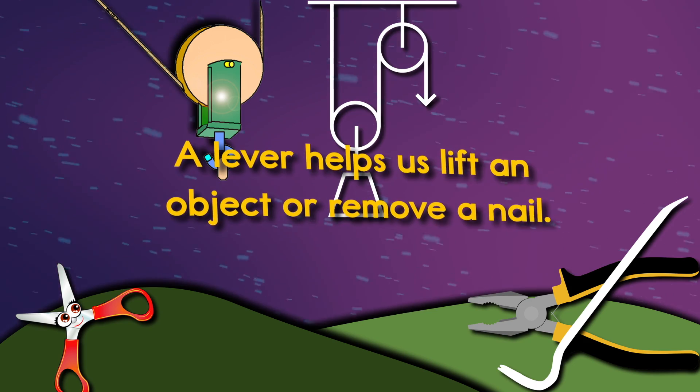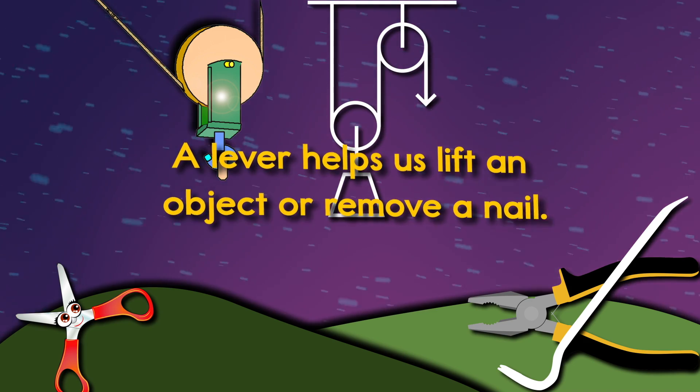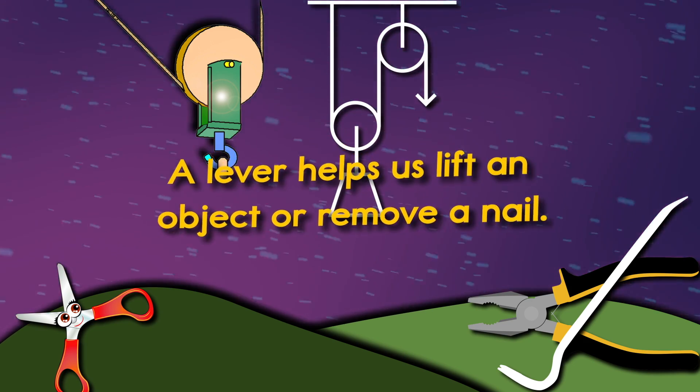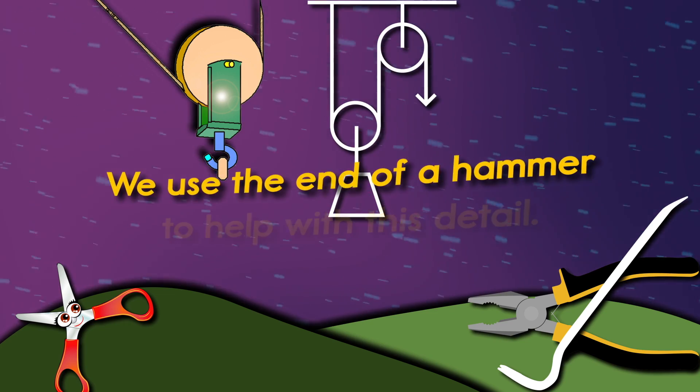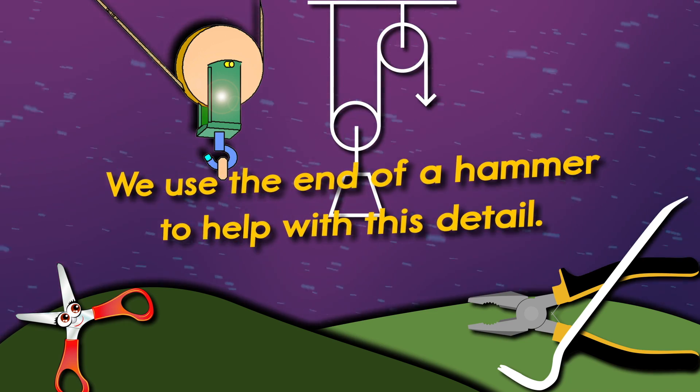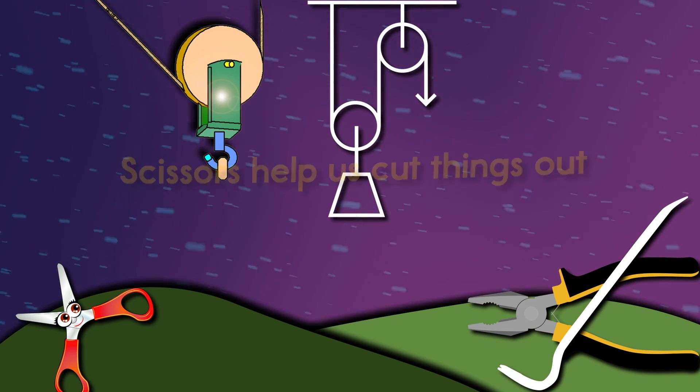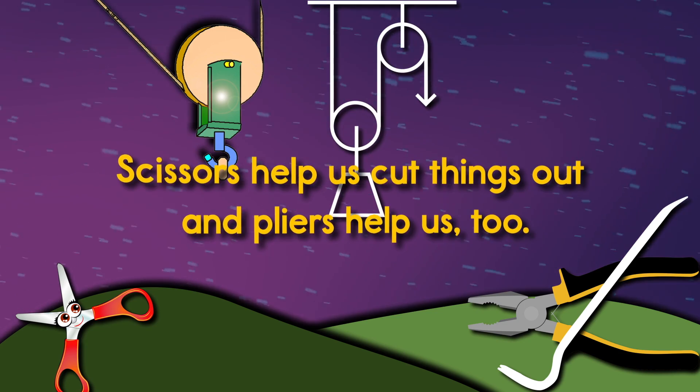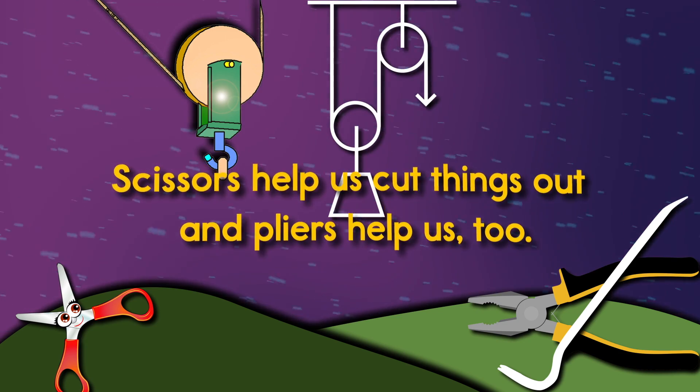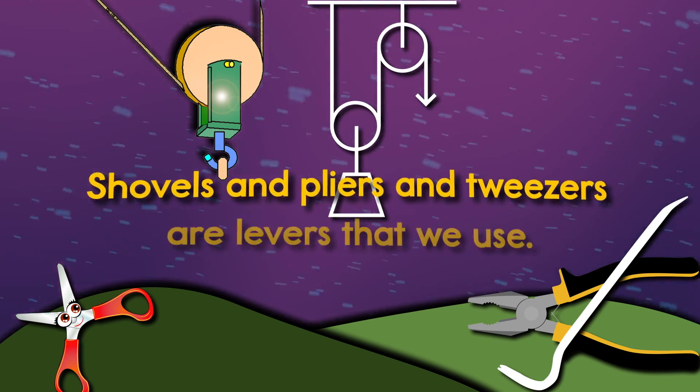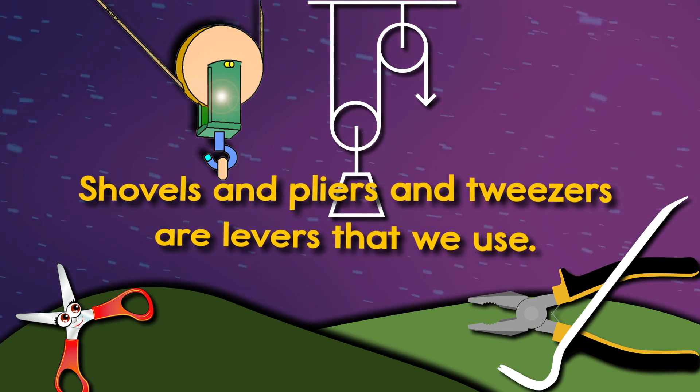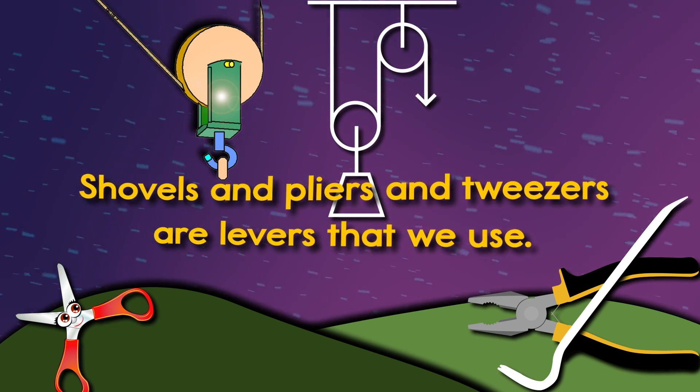A lever helps us lift an object or remove a nail. We use the end of a hammer to help with this detail. Scissors help us cut things out and pliers help us too. Shovels and pliers and tweezers are levers that we use.